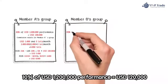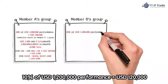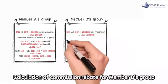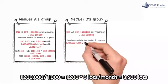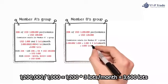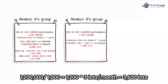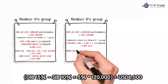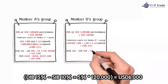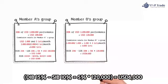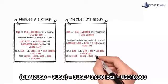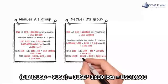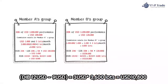For Member B's group: management bonus = 10% × USD 1,200,000 = USD 120,000. Commission rebate: 1,200,000 ÷ 1,000 × 3 lots/month = 3,600 lots. DIB 15% − SIB 10% = 5% × USD 120,000 = USD 6,000. Commission rebate: DIB USD 12 − USD 9 = USD 3 × 3,600 lots = USD 10,800.